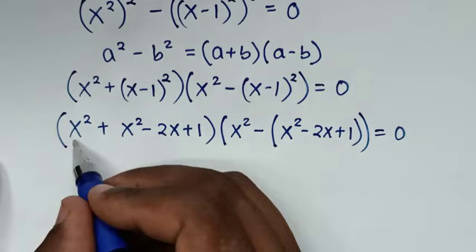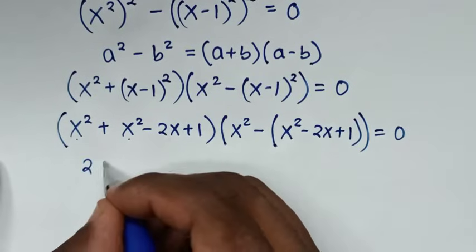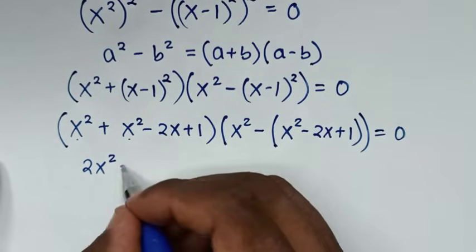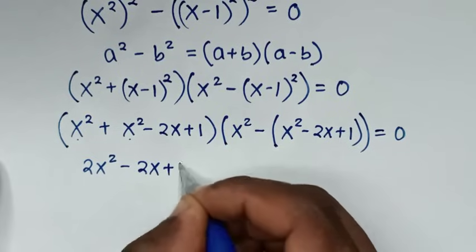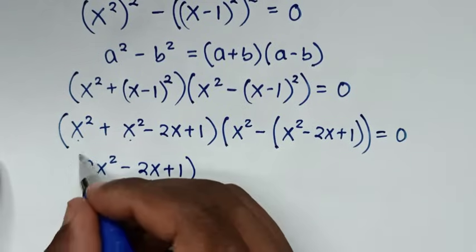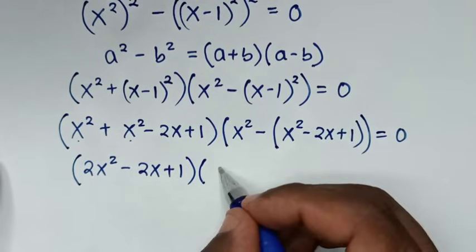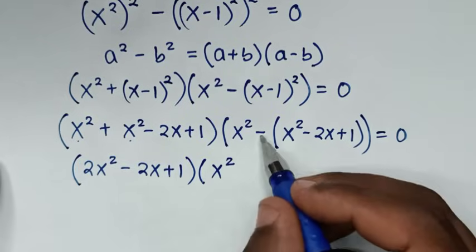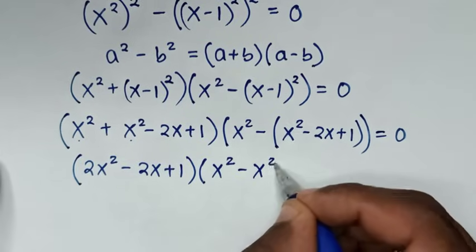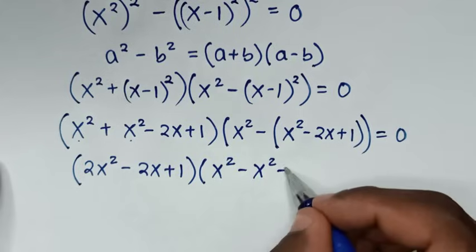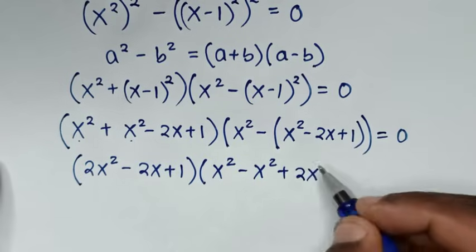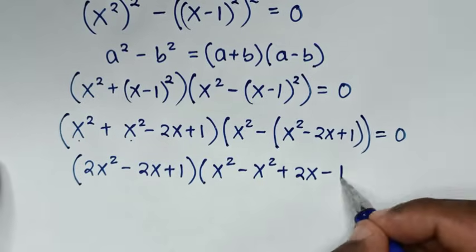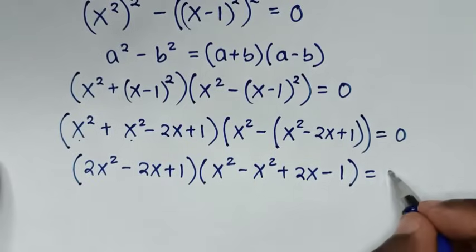Combining like terms in the first factor: x squared plus x squared is 2x squared, then minus 2x plus 1. In the second factor, we take the negative inside the bracket: negative x squared, plus 2x, minus 1, giving the bracket equal to 0.